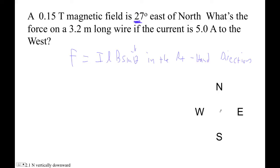So the magnetic field is 27 degrees east of north. Well, that's like that. There's our magnetic field, right? And presumably this angle is 27 degrees.